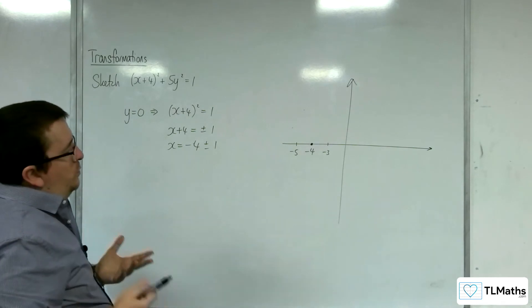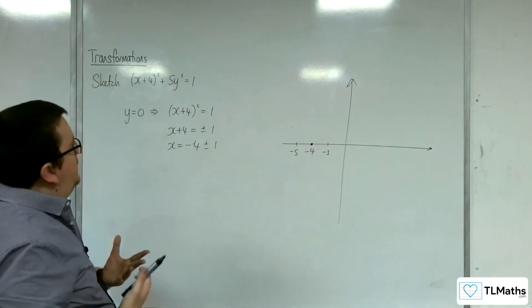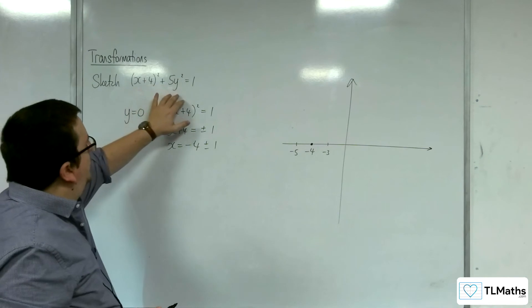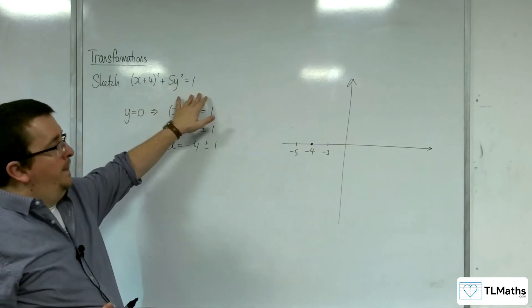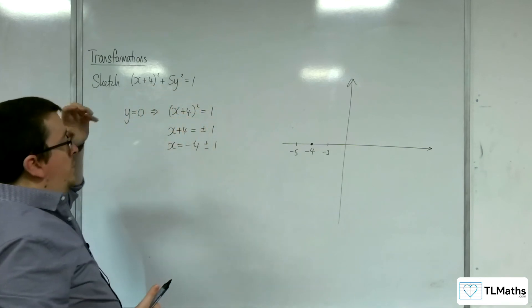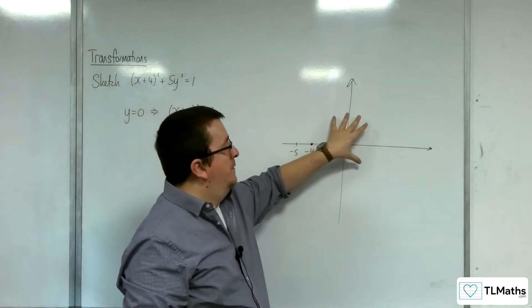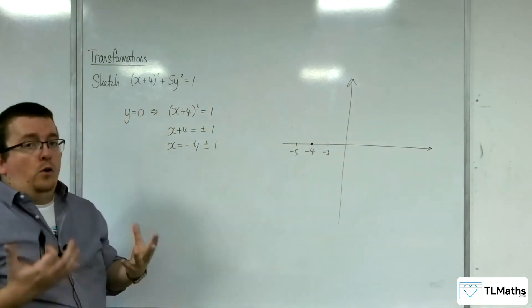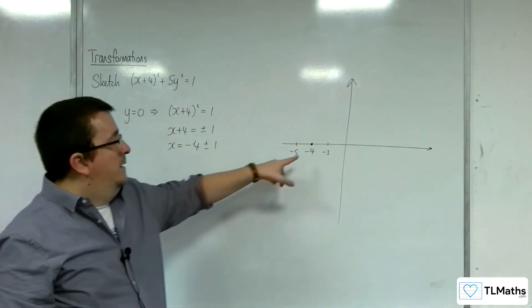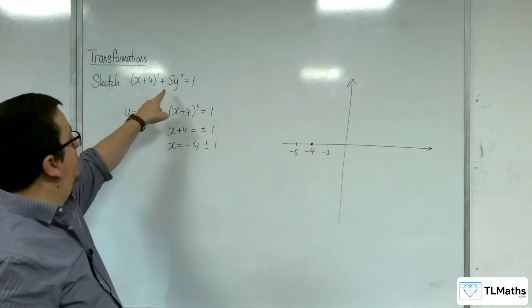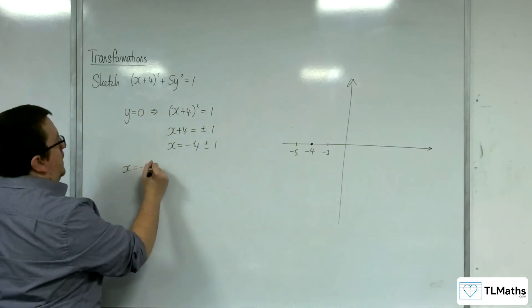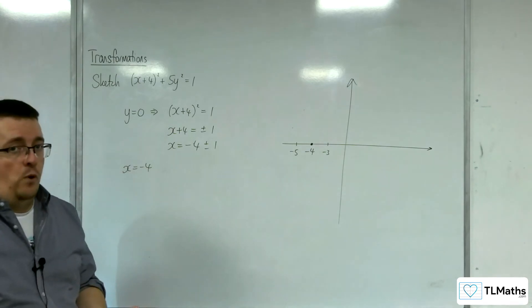Now, the original ellipse, centred at the origin, would have been x squared plus 5y squared equals 1. So, we can either think about the original curve and then translate it, or we can substitute in the minus 4 into this. So, when x is minus 4, that will give us the two values of y.